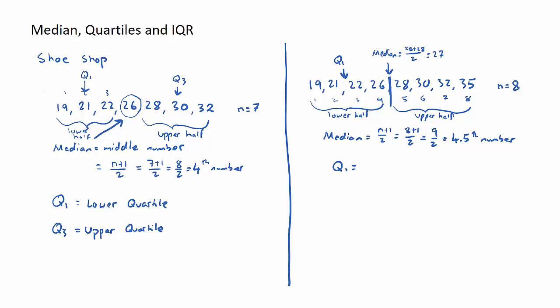And for our upper quartile, similar process—it's the median of the upper half. That will live between these two numbers here. So our Q₃ will equal 31, or the average between 30 and 32. So there's a quick overview of what the median, the lower quartile, and the upper quartile means.